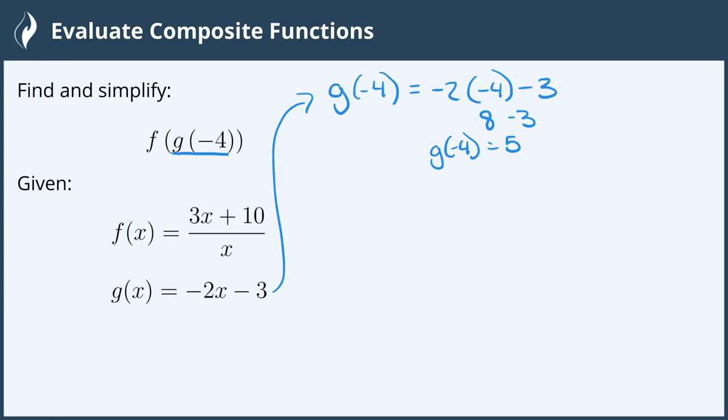And that means that I can take the composite function f of g of negative 4 and replace 5 in for g of negative 4, making this f of 5. And then I go to our function of f and I substitute 5 in for x. So we get f of 5, which equals 3 times 5 plus 10 all over x, which is 5.